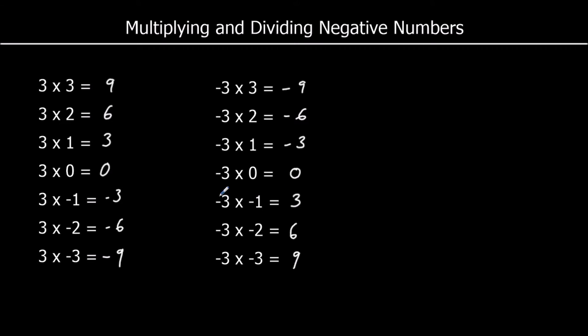So what we have here is a negative times a negative: negative 3 times negative 1 is 3, negative 3 times negative 2 is 6, negative 3 times negative 3 is 9. So a negative times a negative is a positive.